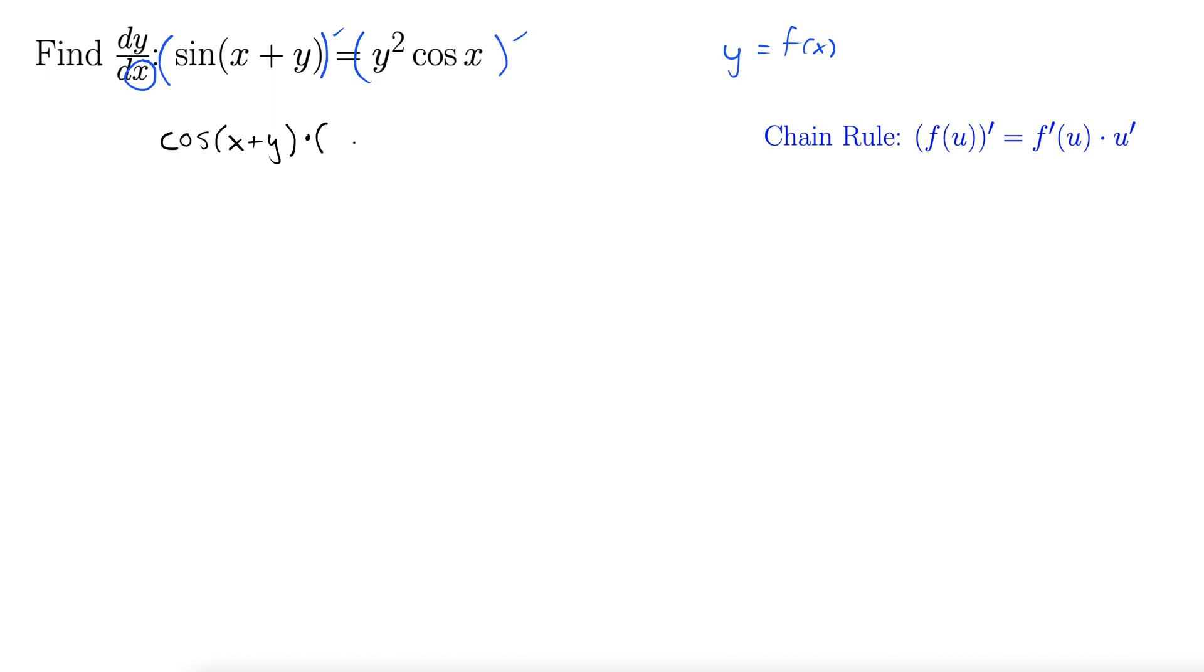Now I'm gonna take the derivative of the inside. So derivative of x is 1 plus well the derivative of y is 1 but every time we take the derivative across a y we throw on that extra y prime. That's essentially the chain rule.